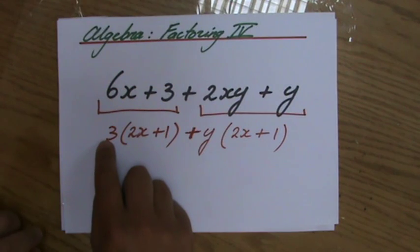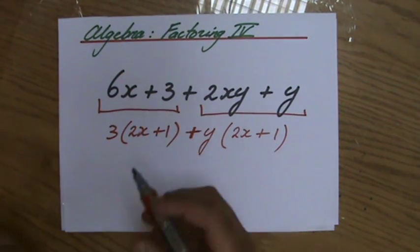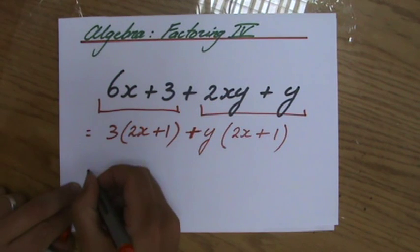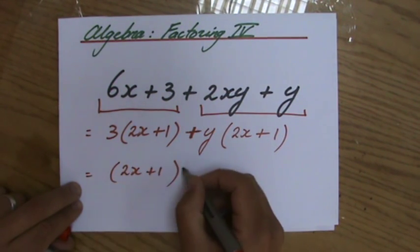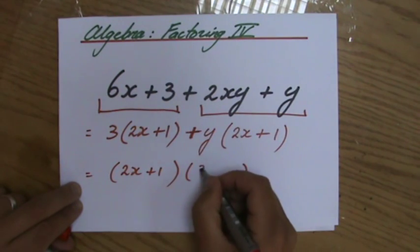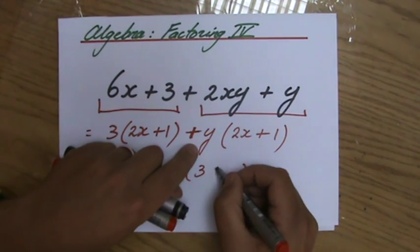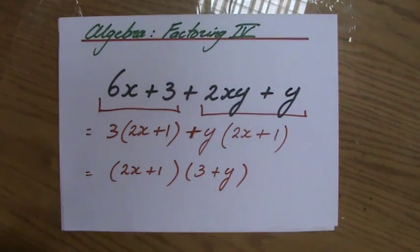One time I have to multiply it by 3. The other time I have to multiply it by y. So my final answer is 2x plus 1 multiplied by 3 plus y. Finished.